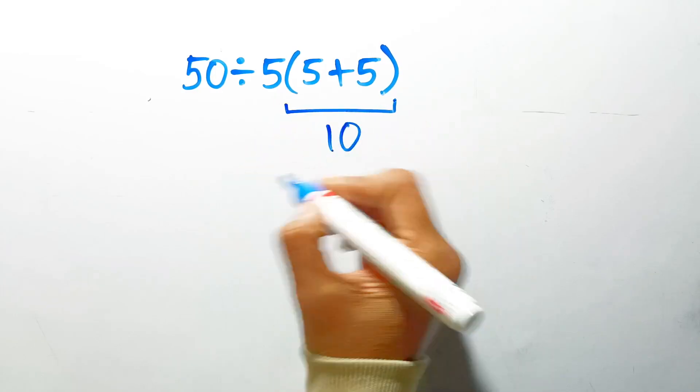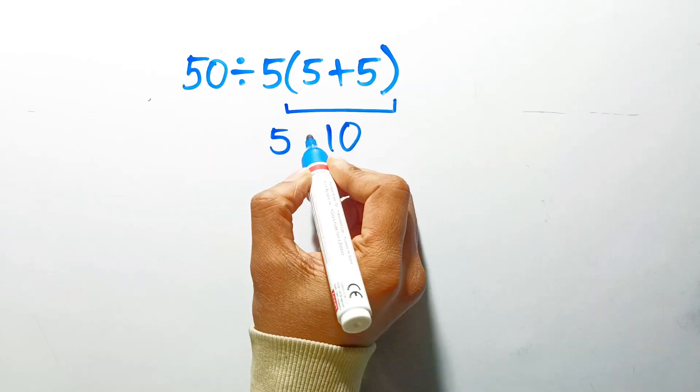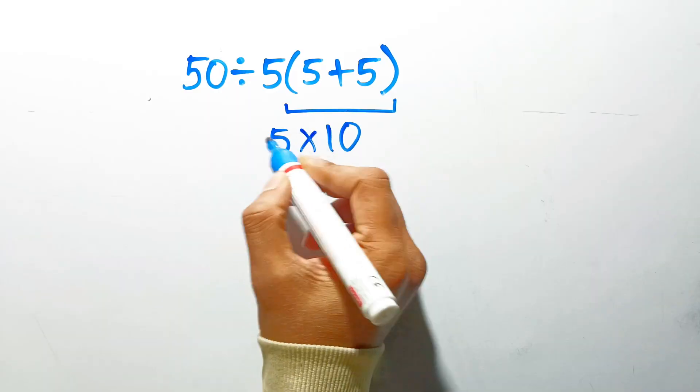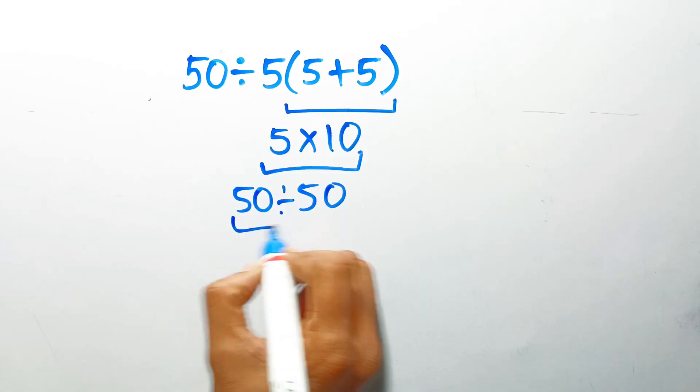5 plus 5 gives us 10, and again here we see this 5 outside, which makes us think we should multiply 5 by 10 to get 50, so 50 divided by 50 gives us 1.